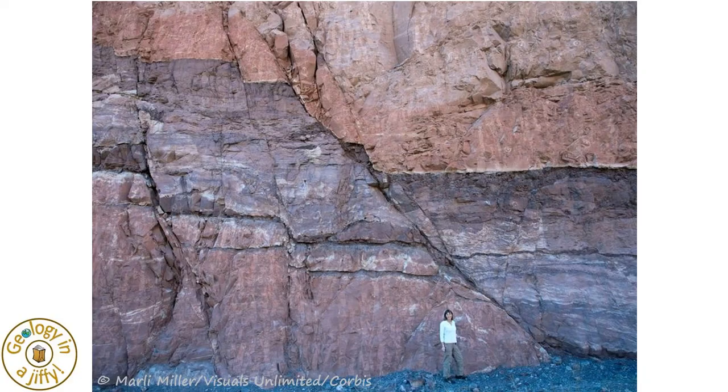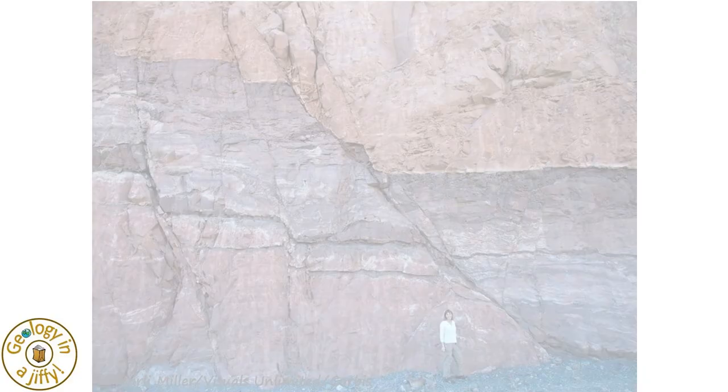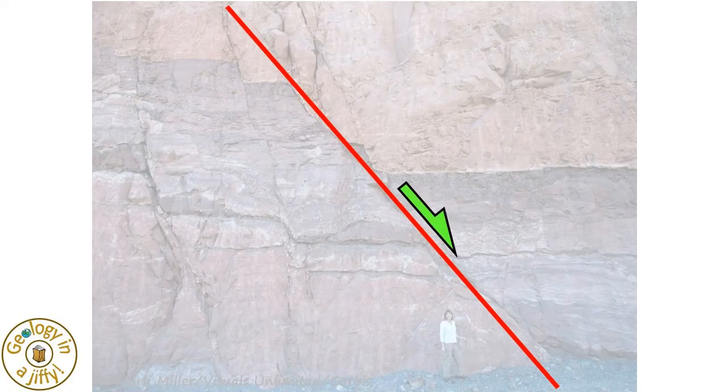In this photo, we can clearly see the steeply dipping fault plane, with the rock to the right having moved downwards compared to the rocks on the left.